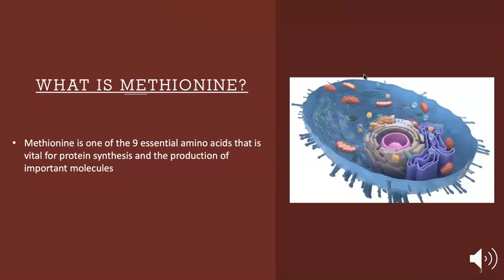So now what is methionine? Methionine is essentially one of our nine essential amino acids and is vital for protein synthesis and the production of important molecules. More so it's an essential amino acid because the body cannot produce it on its own, meaning that we have to acquire it through external food sources.